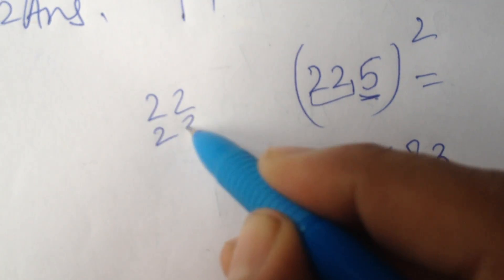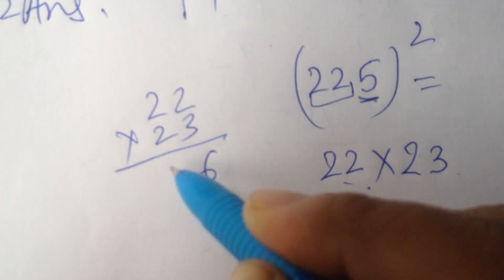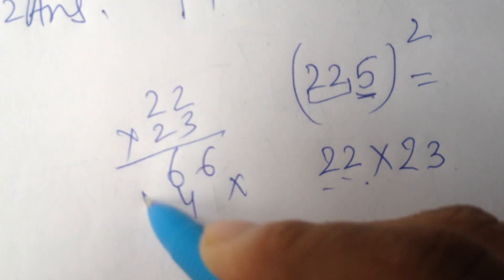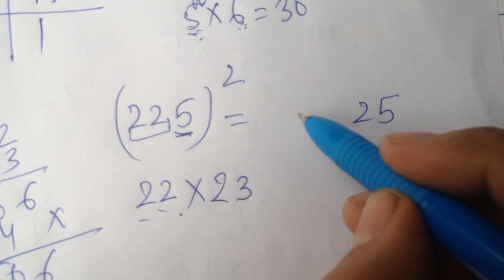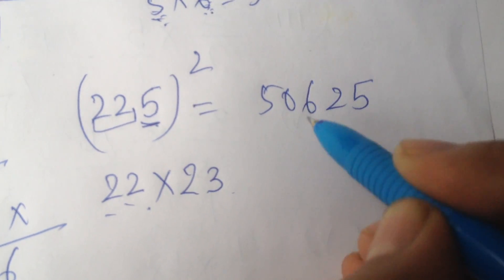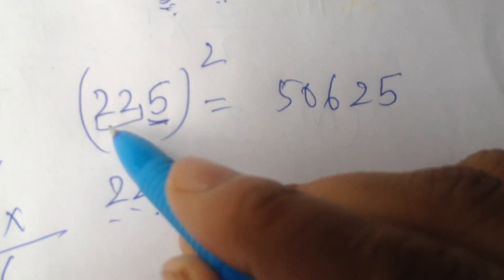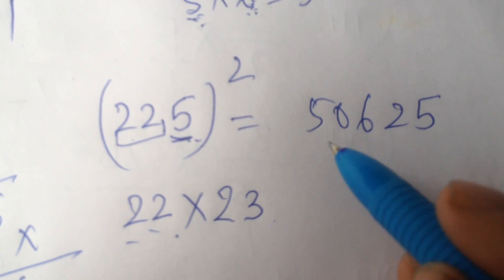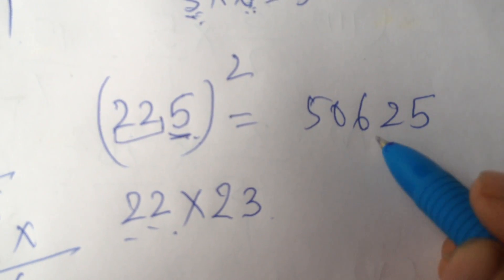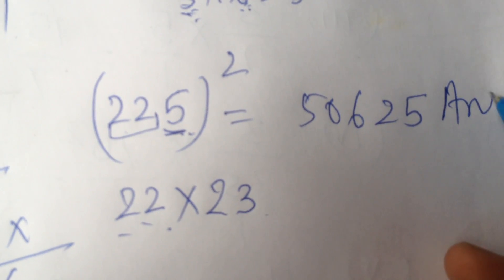Multiply 22 with 23. 22 multiplied by 23 gives 6, 6, 4, 4, carry 6, 0, 5. So answer is 5, 0, 6 giving 506. Complete answer is 50,625. If you multiply 225 by 225, your answer will be 50,625. I think this concept is clear to you.